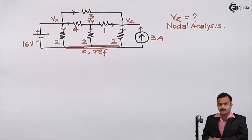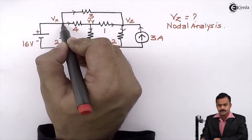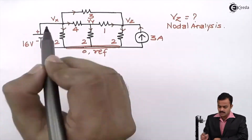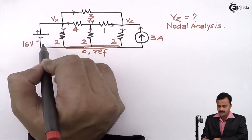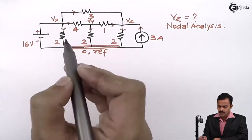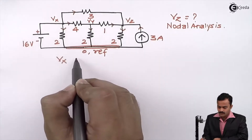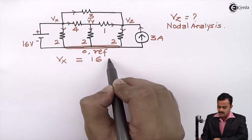Now if you see the network properly, you'll know that between node X and the reference only a voltage source is present, and the value is 16. So I can directly say Vx equals 16.